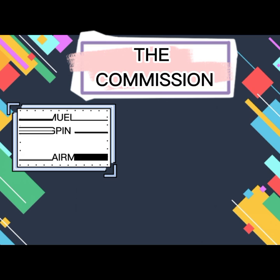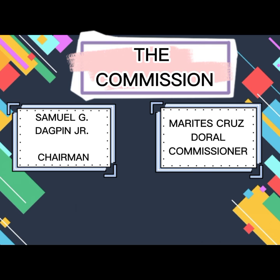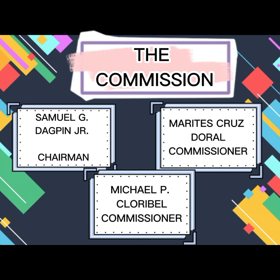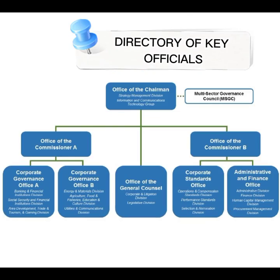The Commission is composed of Samuel G. Dagpin Jr., Chairman; Marites Cruz Dural, Commissioner; and Michael P. Cloribel, Commissioner. Sila yung bumubuo sa isang GOCC. The Directory of Key Officials includes the Office of the Chairman, under which are the Office of Commissioner A and the Office of Commissioner B. Under the Office of Commissioner A is the Corporate Governance Office A and Corporate Governance Office B. Under the Office of the Chairman is also the Office of the General Counsel. Under the Office of Commissioner B are the Corporate Standards Office and the Administrative Finance Office.